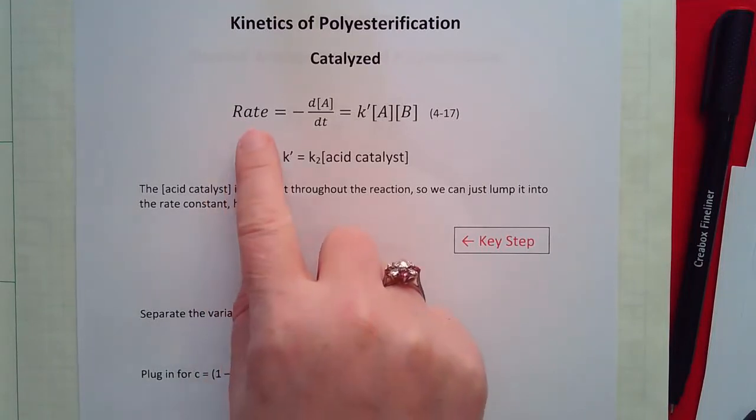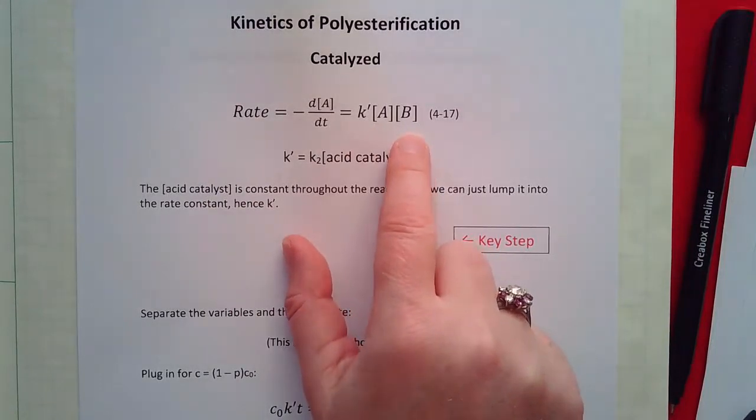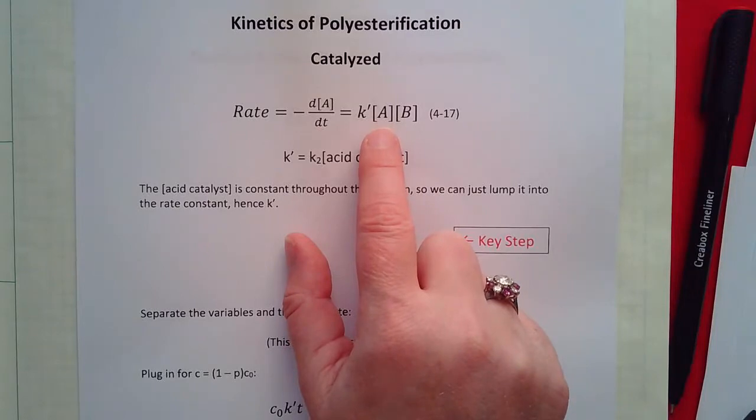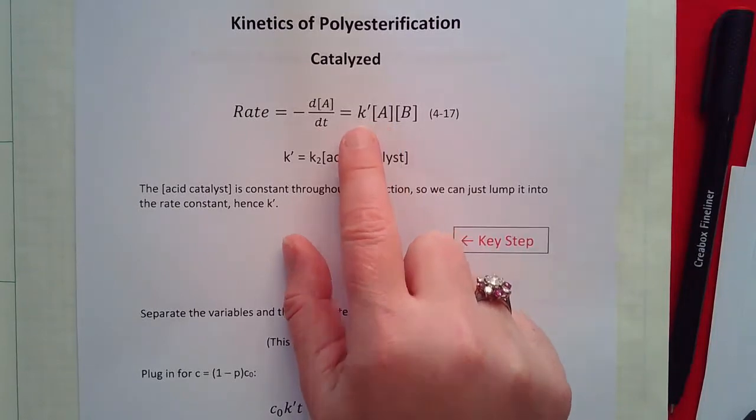So here's the experimentally determined rate law. If you look at it closely you'll notice the only difference is that A is not squared. We have a different rate constant.